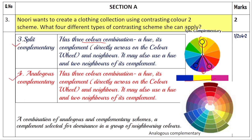The fourth type is the analogous complement color scheme. Here you have a hue — say red — its complement, green, and also take the colors adjacent to the complement. The red color creates dominance among the analogous colors on the color wheel, making it a more striking color combination. In analogous color schemes colors are adjacent to each other, while in complementary they are opposite.